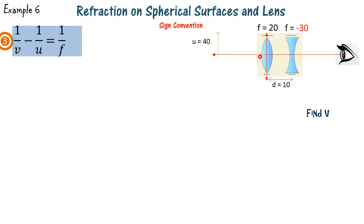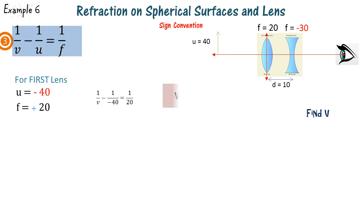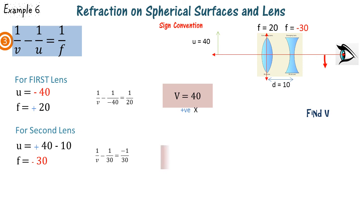Here we have a combination of a convex lens and a concave lens separated by 10 centimeters. The object is placed 40 centimeters from the convex lens, whose focal length is plus 20. The image from the convex lens forms 40 centimeters from it, which is 30 centimeters from the concave lens. This image acts as the object for the second lens, so u is plus 30. The focal length of the concave lens is minus 30, and v equals infinity, meaning the final image is at infinity.